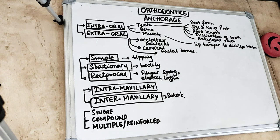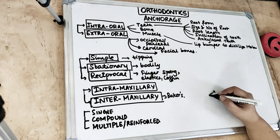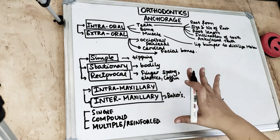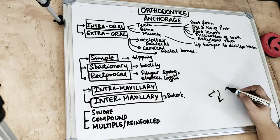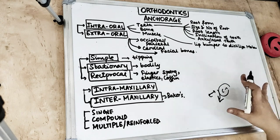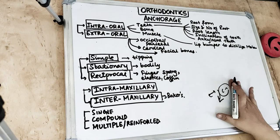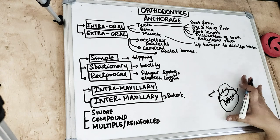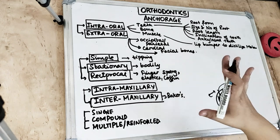Coming to anchorage, the forces which are used to move the teeth are derived from anatomical areas which are known as anchors - like an anchor in a ship. Newton's third law of motion states that every action has an equal and opposite reaction. So if we put an anchor in a ship to stop the ship, that's how we use an anchor to do certain tooth movements.